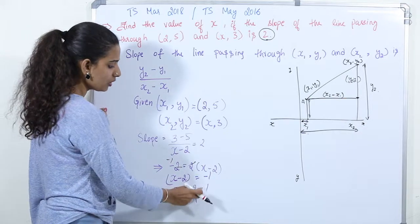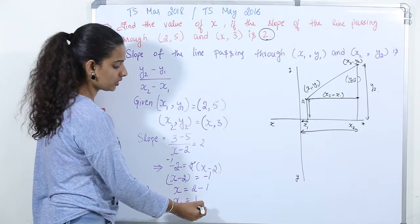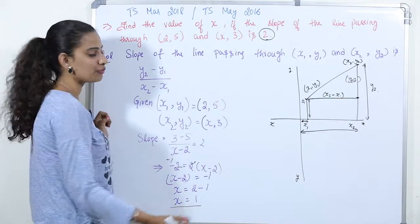So, x is equal to 2 minus 1, x is equal to 1. So, this is the value of x.